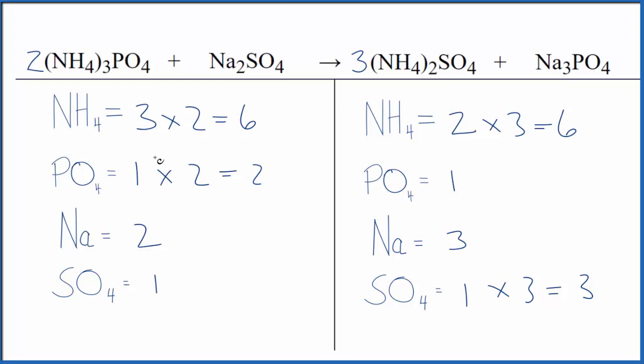Why don't we fix the phosphates next? If we put a two in front of the sodium phosphate, we have the one phosphate times two. So those are balanced. Three times two for the sodiums. So that gives us six sodium atoms.